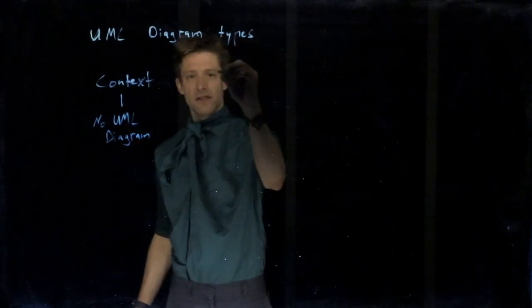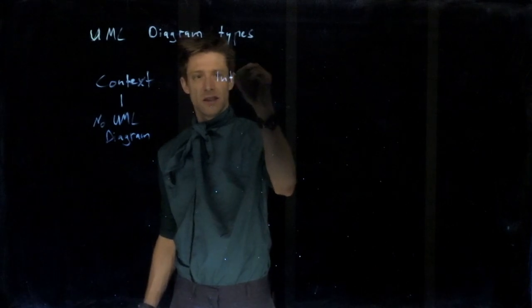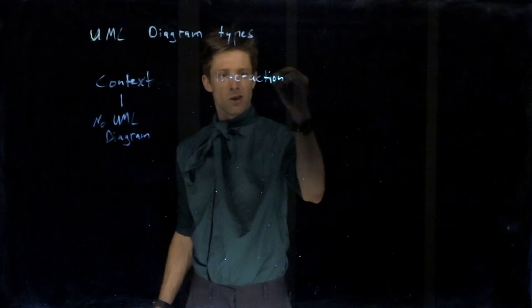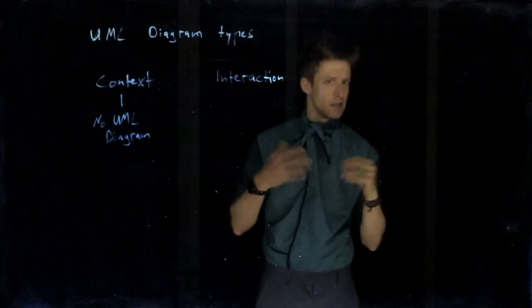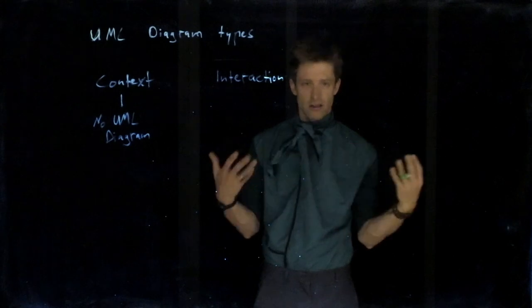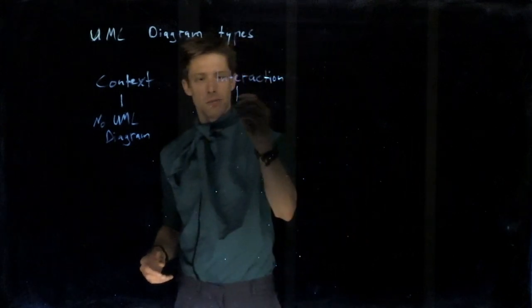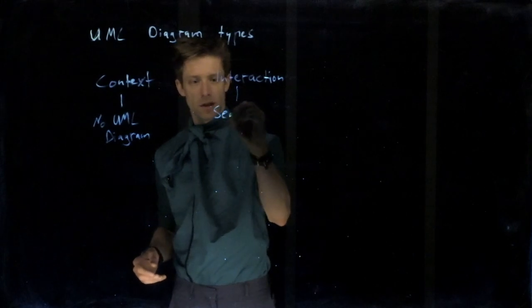Then we have the so-called interaction diagrams, describing how several components, systems, subsystems, several units communicate with each other. The prime example here is the UML sequence diagram.